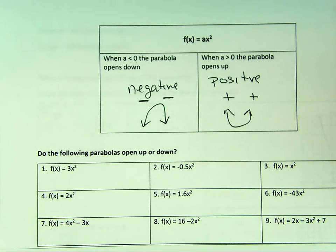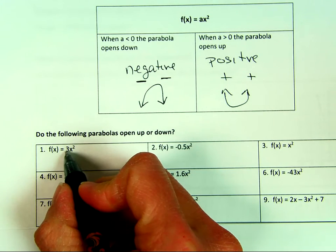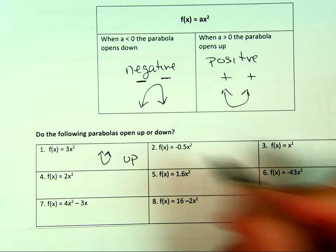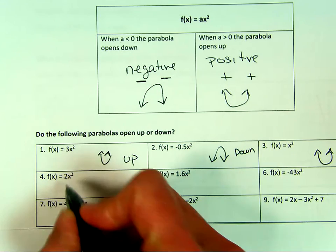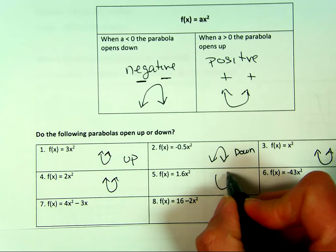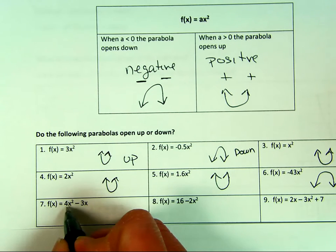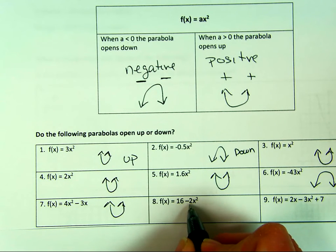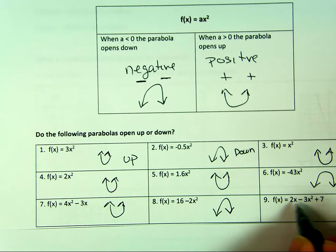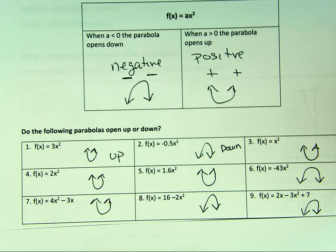On these practice problems, all I want to know is does it open up or down. I see a 3 — that's positive, so it opens up. That one's negative, so it opens down. Positive, because it's a 1. For this one, I don't look at the other numbers — I only look at a, which is always in front of x squared. A 4 means positive, opens up. The number in front of x squared is negative, so it opens down. Remember: the number in front of x squared is a.